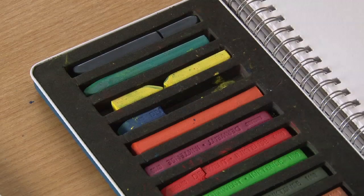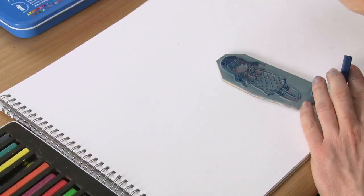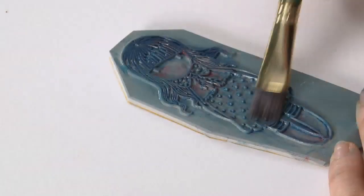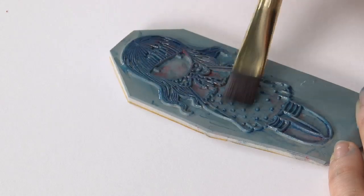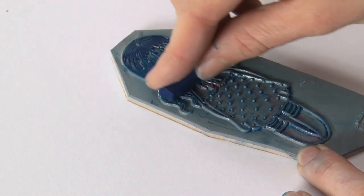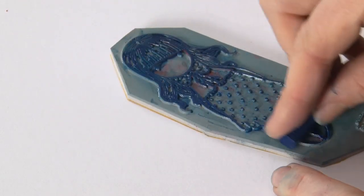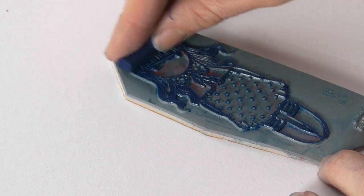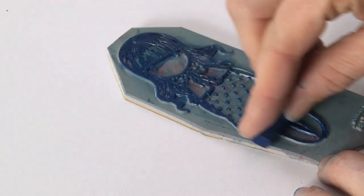All I'm going to do is take a paintbrush and just wet the stamp area with a paintbrush. I'm then going to take my inktense block and all I'm going to do is just drag the side of the block over the stamp.